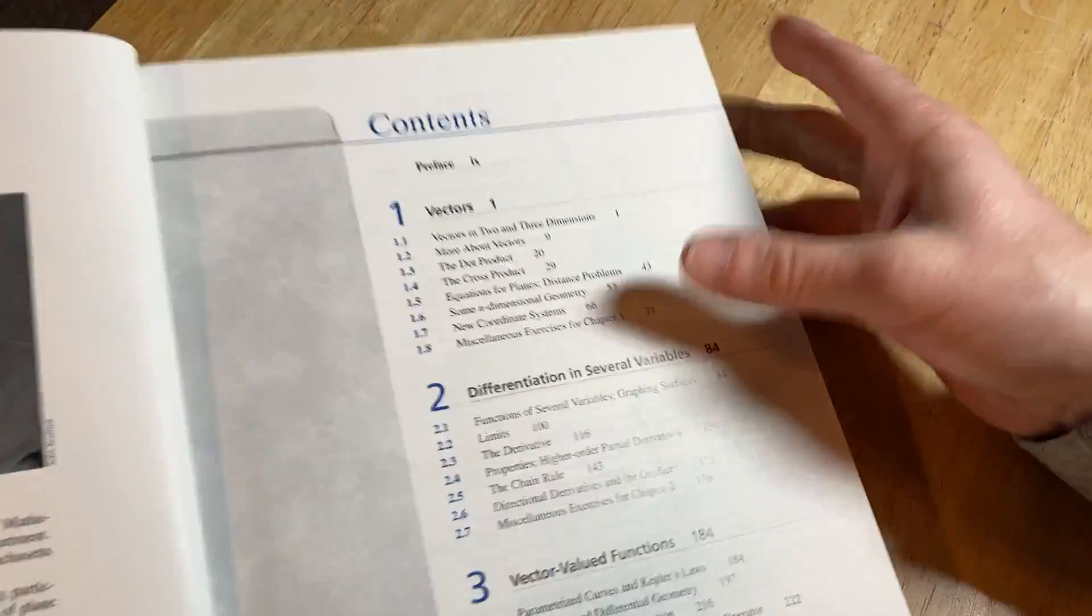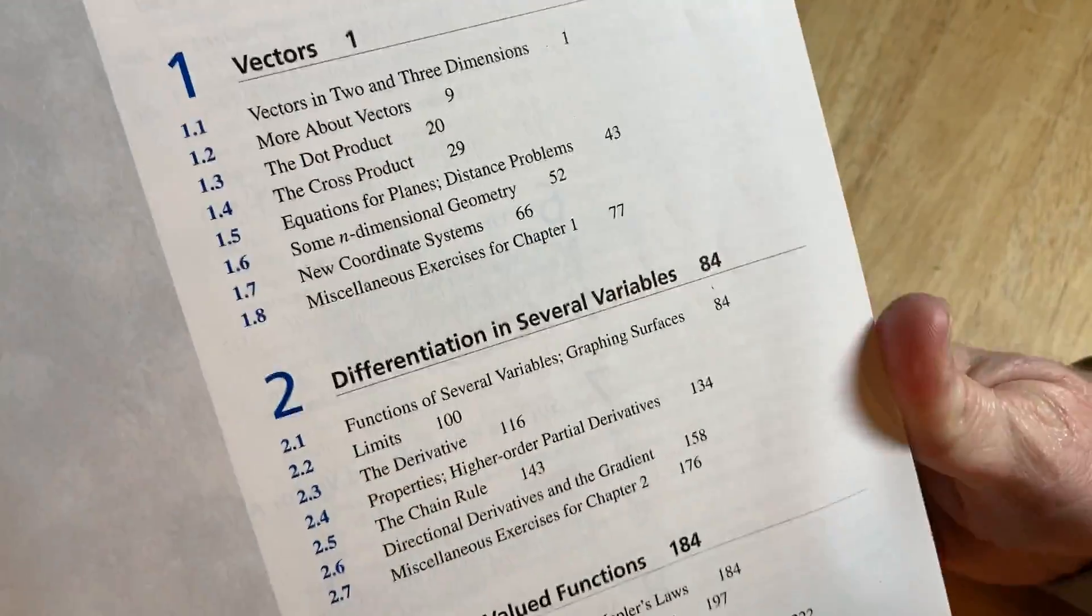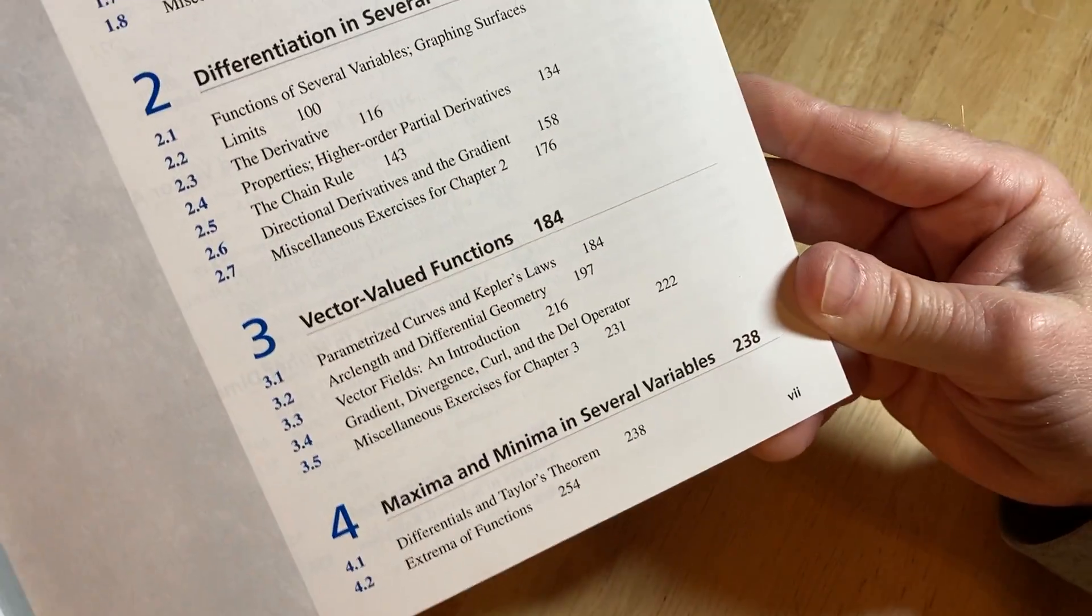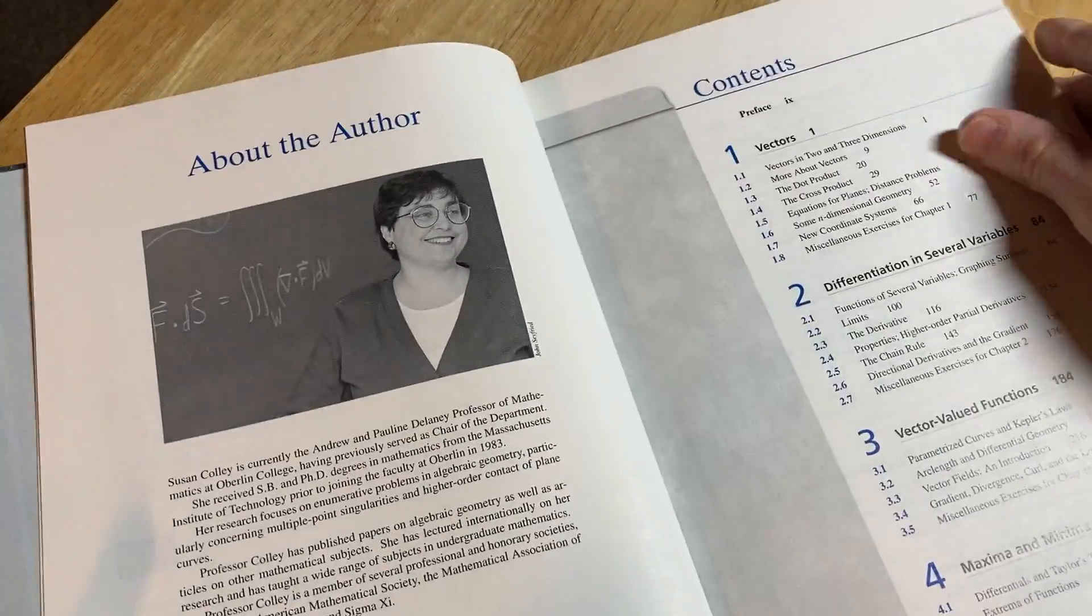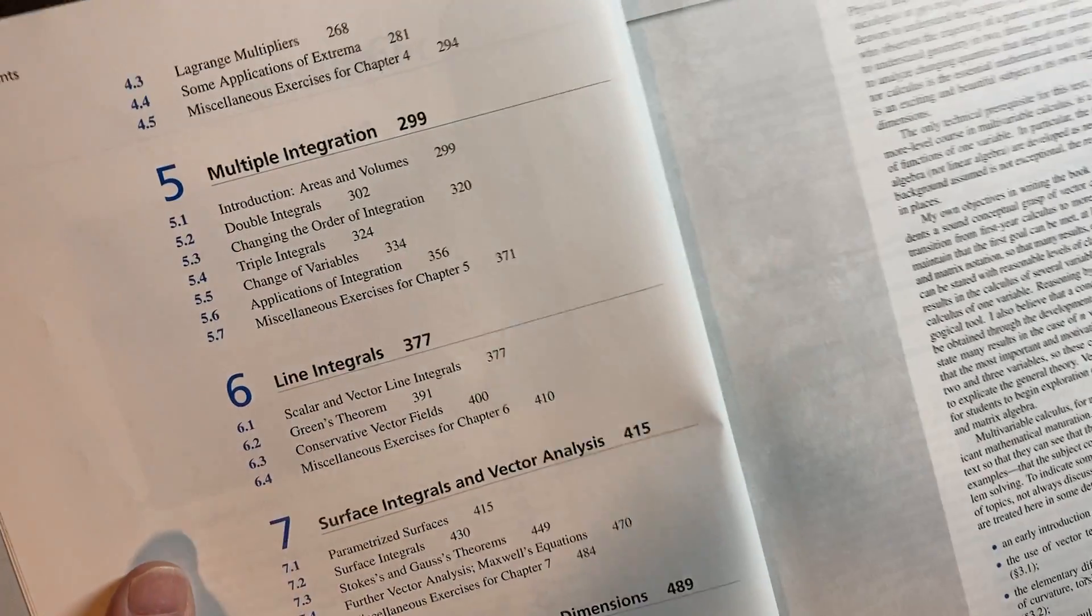And then here's the topics. So vectors, differentiation in several variables. It's just nice to have a book that focuses on just this. Vector-valued functions, maxima and minima in several variables. If you've already had Calculus 3, this would be a really awesome book to go back and solidify your knowledge.